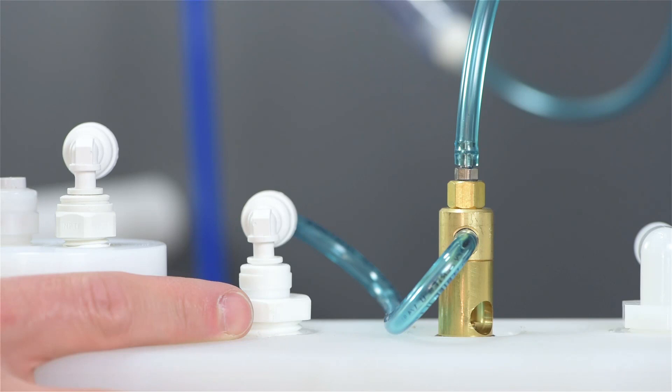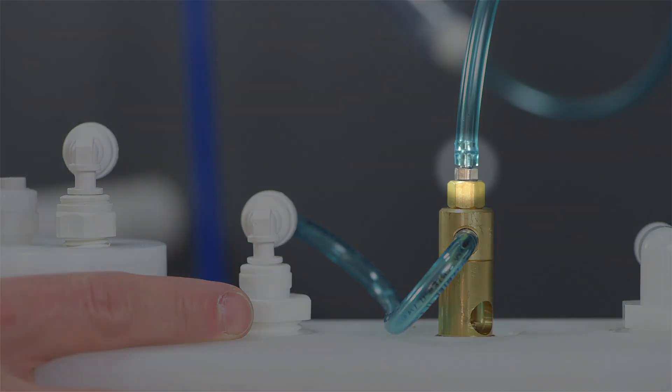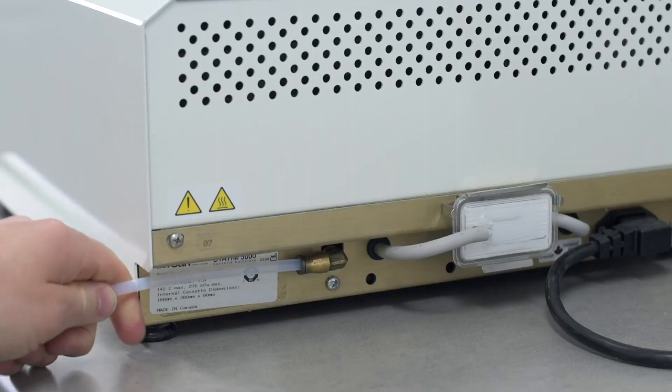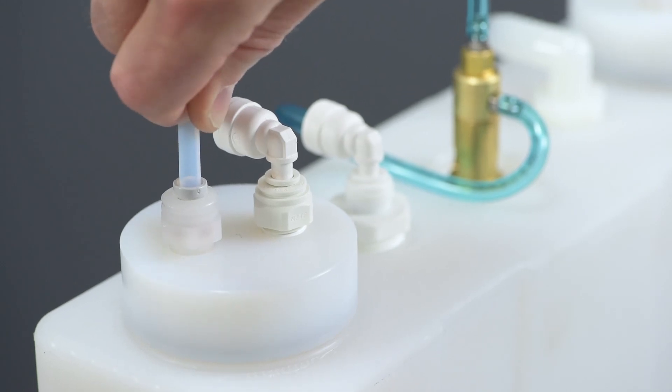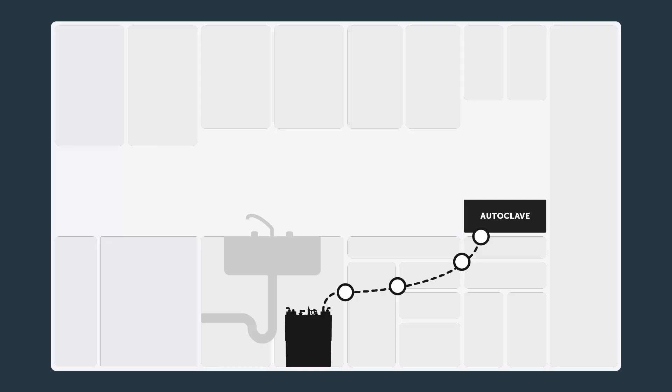Connect the 1 and a quarter inch high temp Teflon tubing from the autoclave to the milky white Kynar fitting on top of the white manifold. Make sure the tubing doesn't kink when moving the autoclave or pulling the tubing through the cabinet partition holes.